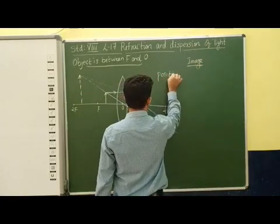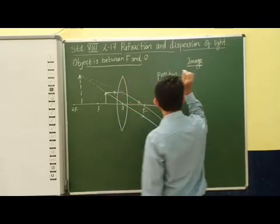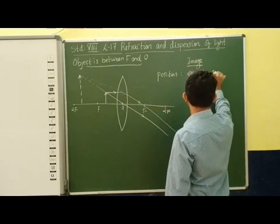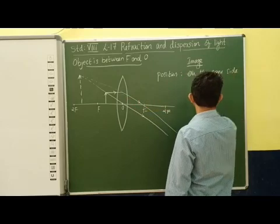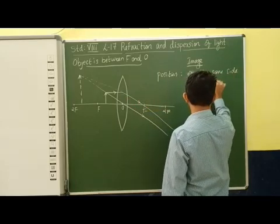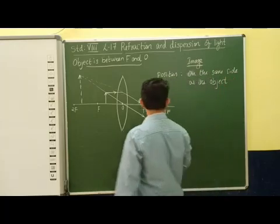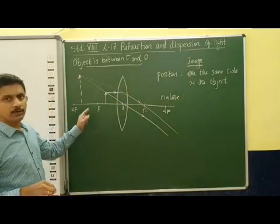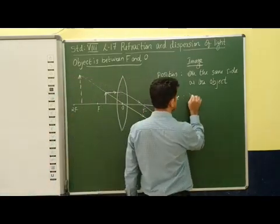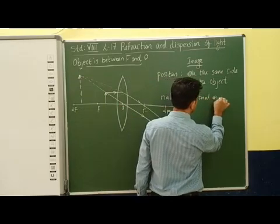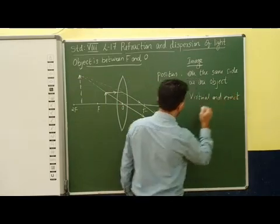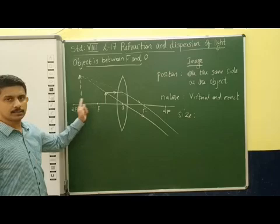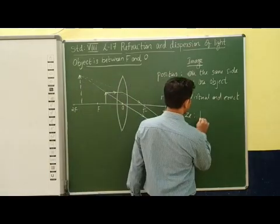The position of the image is on the same side as the object. The nature of the image is virtual and erect — this image cannot be projected on a screen. The size of the image is larger than the object.